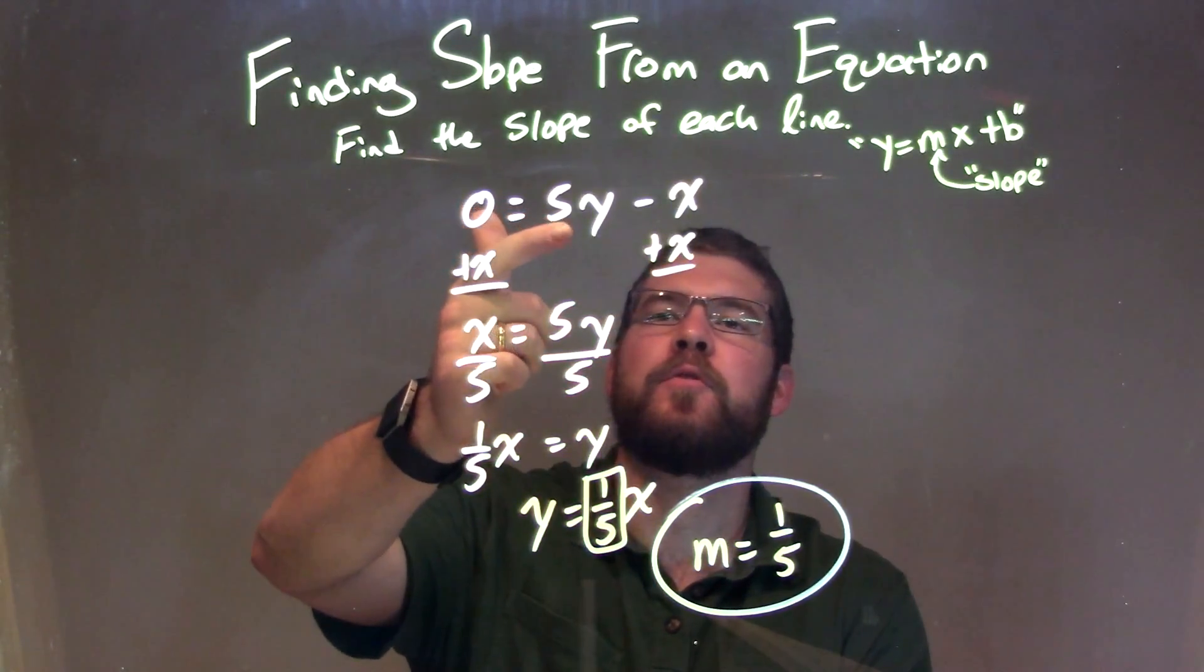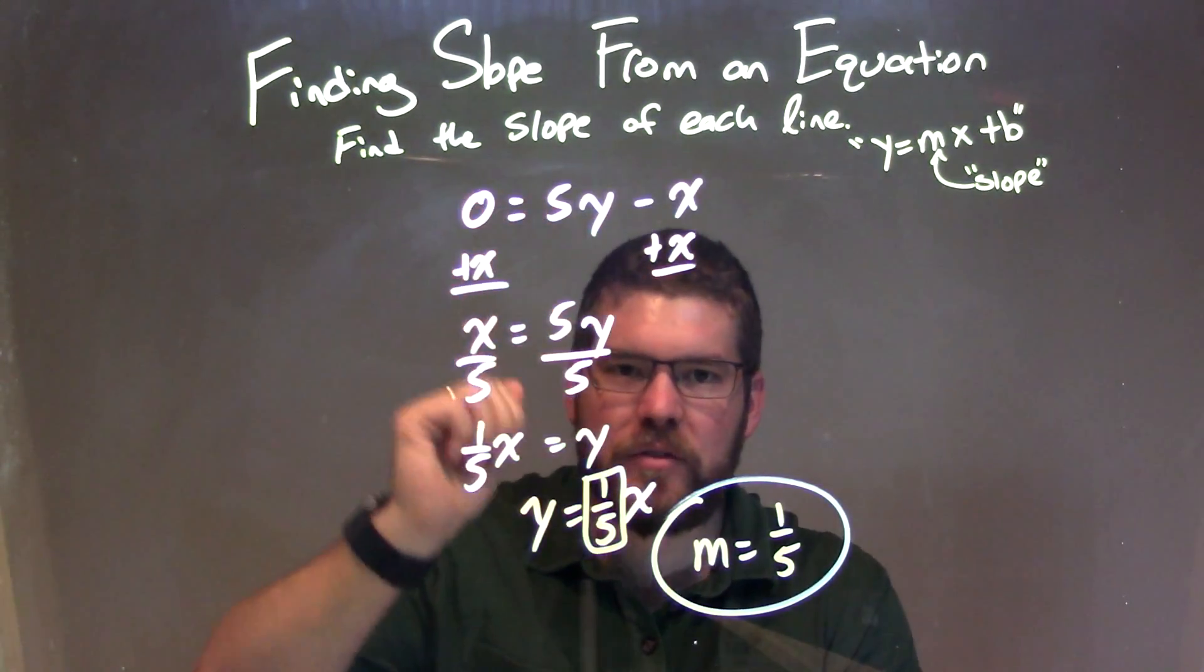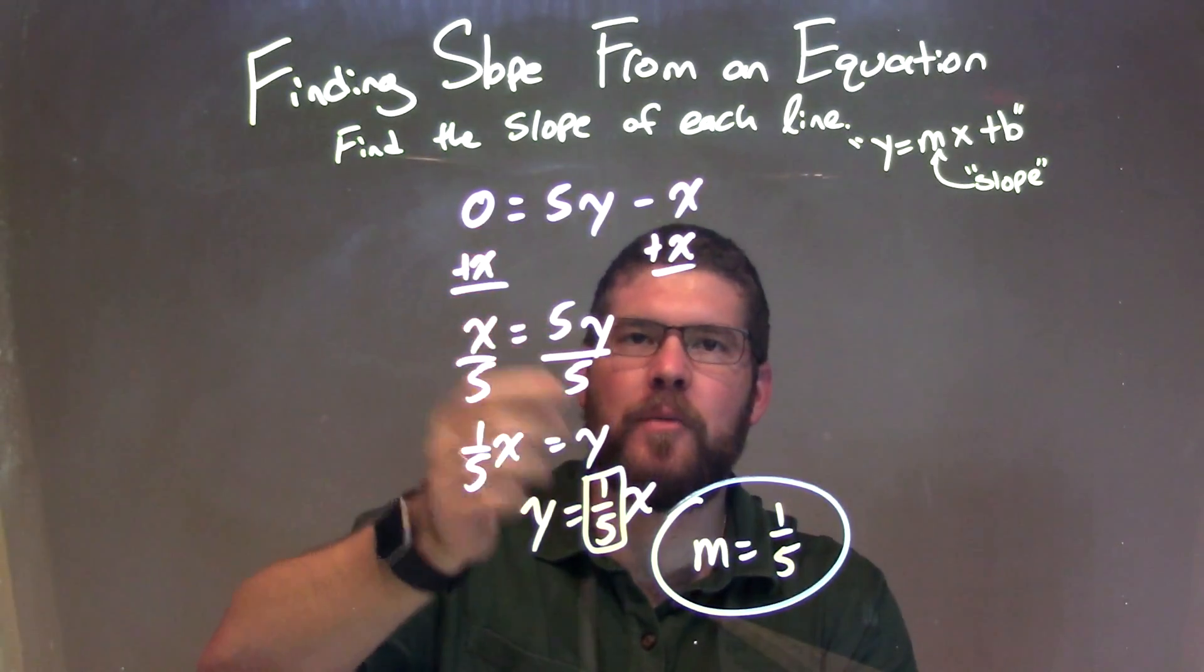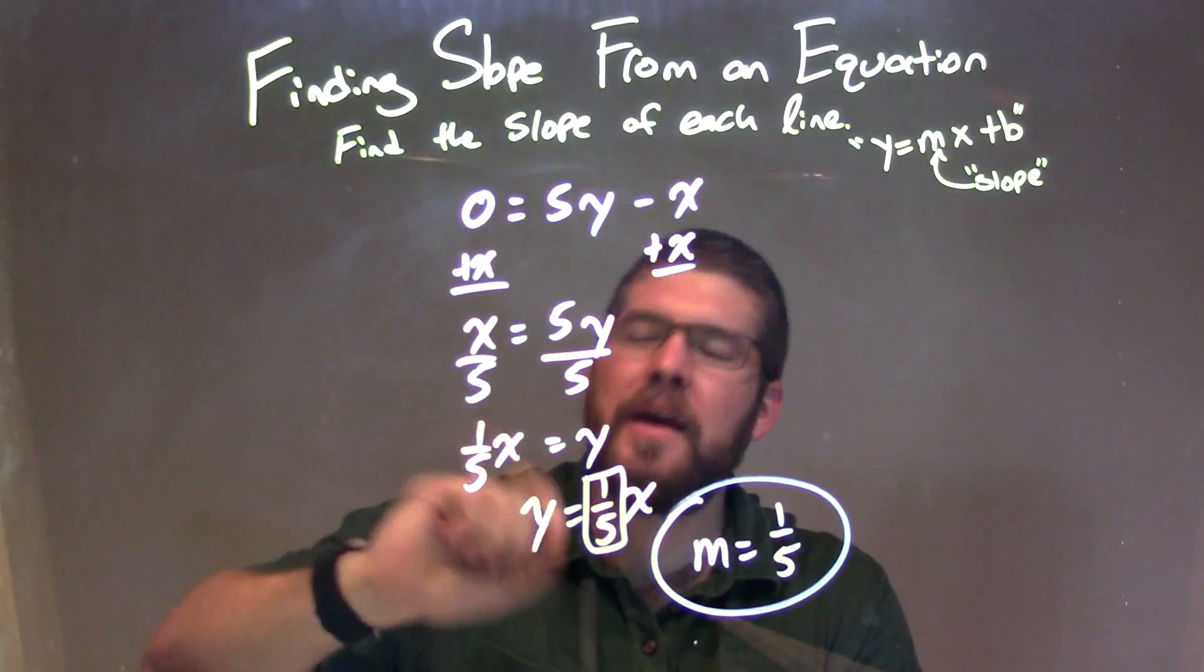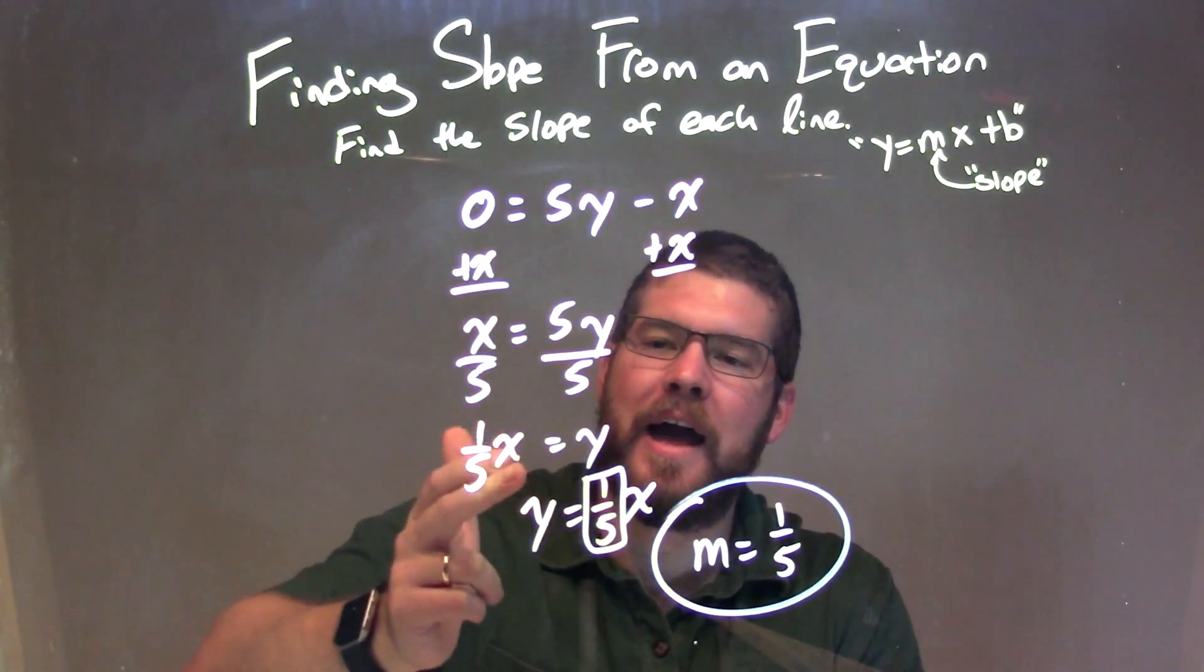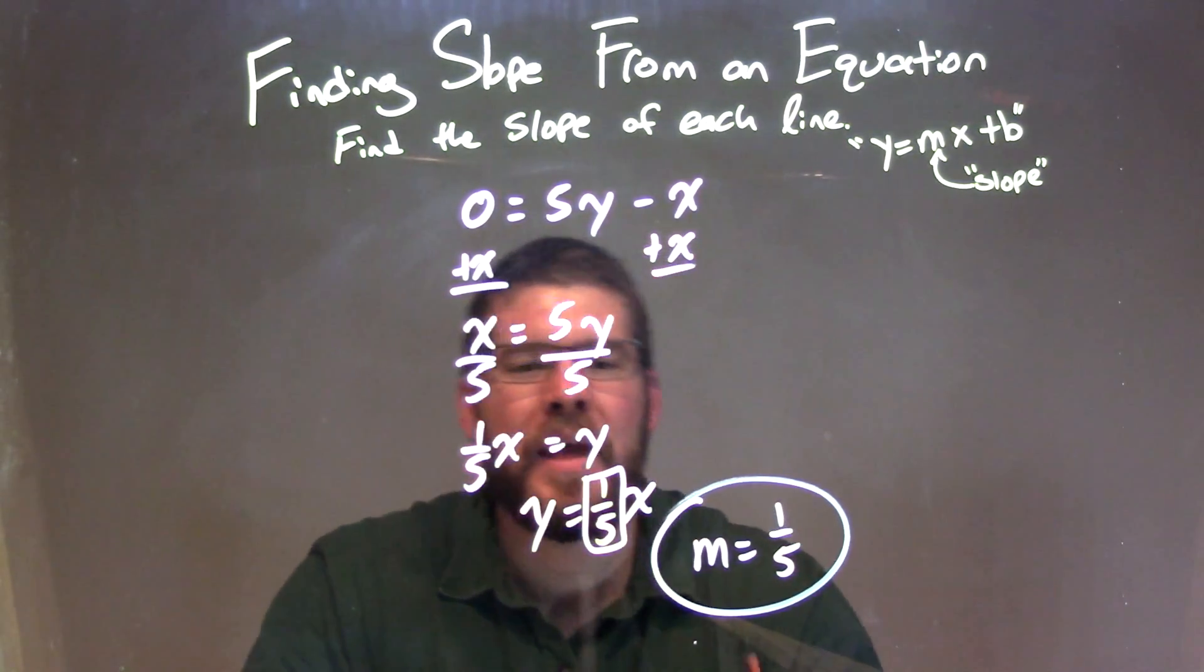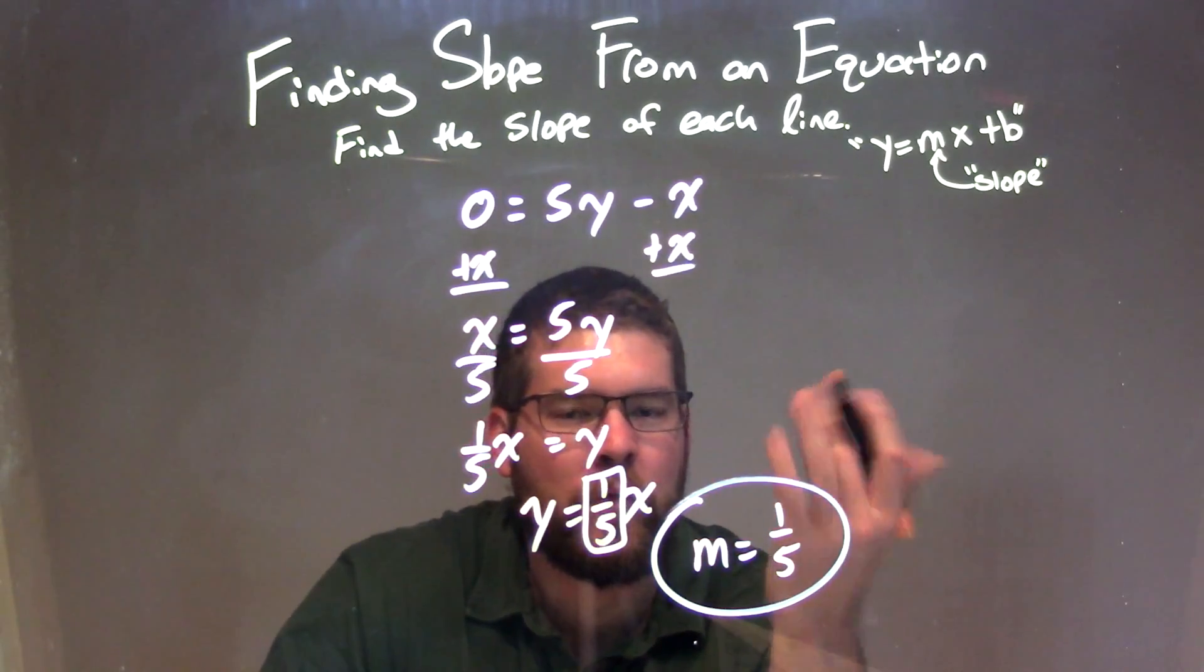Let's recap. We're given 0 equals 5y minus x. Our first step is to isolate y. I added x to both sides, then divided both sides by 5. That left me with 1/5 x equals y. I rearranged that to have y come first.